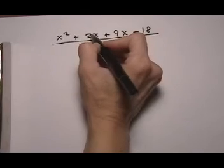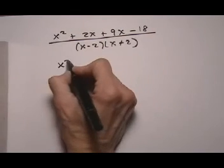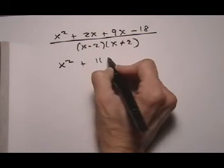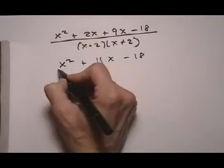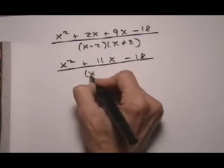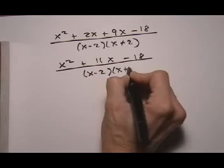And now we're going to collect these like terms, the 2x and the 9x. So we get x squared plus 11x take away 18, over x take away 2, x plus 2.